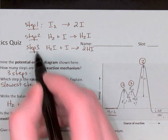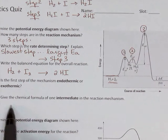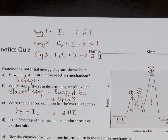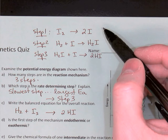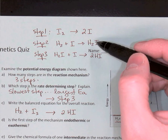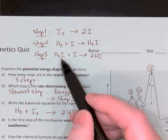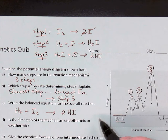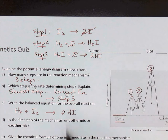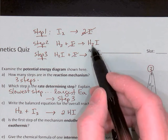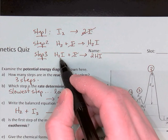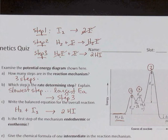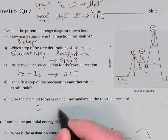Now we can jump to part E: give the formula of one intermediate in the reaction mechanism. An intermediate is something produced in an early step — on the product side — but then used up as a reactant in a later step. Notice two I's are produced in step one and used up in steps two and three, so I is one intermediate. H₂I is produced in step two and used up in step three, so H₂I is also an intermediate. The two intermediates are I and H₂I.